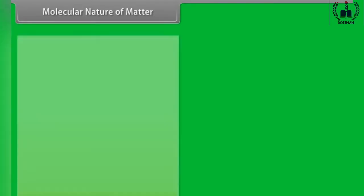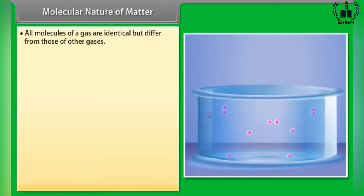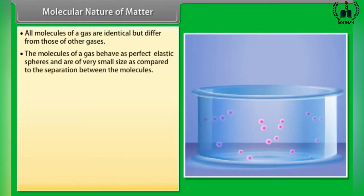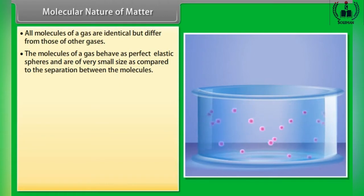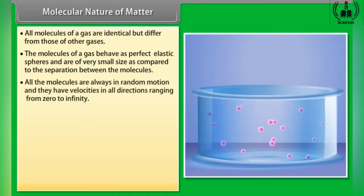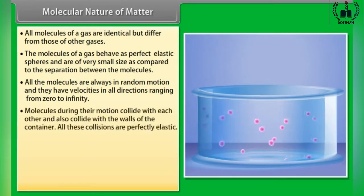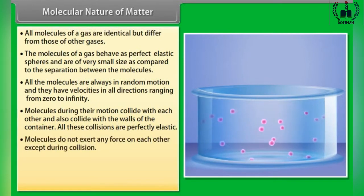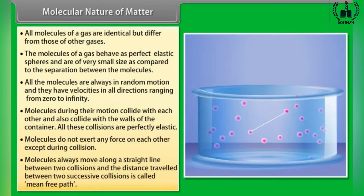Molecular nature of matter. All molecules of a gas are identical but differ from those of other gases. The molecules of a gas behave as perfect elastic spheres and are of very small size compared to the separation between the molecules. All molecules are always in random motion and have velocities in all directions ranging from 0 to infinity. Molecules collide with each other and with the walls of the container. All collisions are perfectly elastic. Molecules do not exert any force on each other except during collision. Molecules move along a straight line between two collisions, and the distance travelled between two successive collisions is called the mean free path.